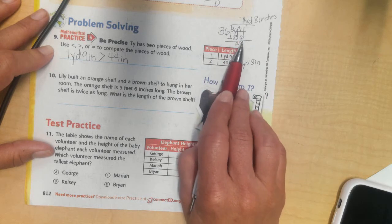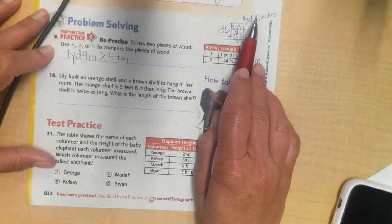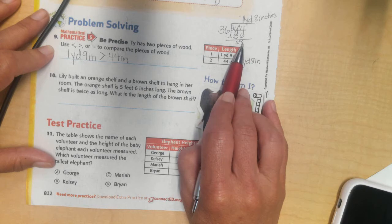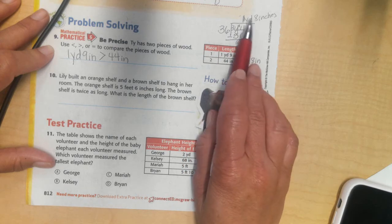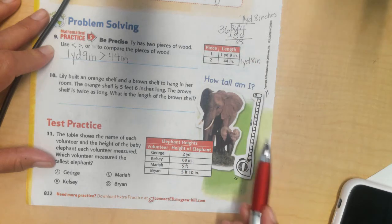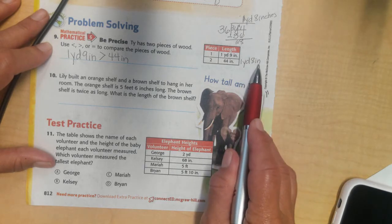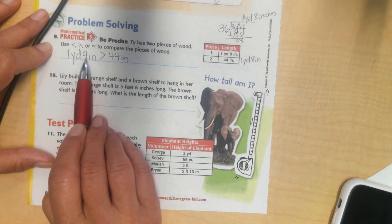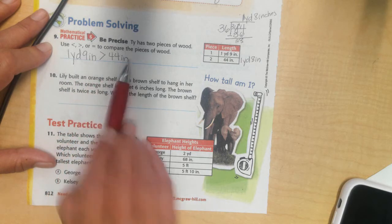I'm going to leave that 8 because that's how many inches I still have left. If I have 36 plus 8 inches, I would get 44 inches. So, that's going to be 1 yard and 8 inches. And I can tell 1 yard and 8 inches is smaller than 1 yard and 9 inches. So, I wrote 1 yard and 9 inches is greater than 44 inches.